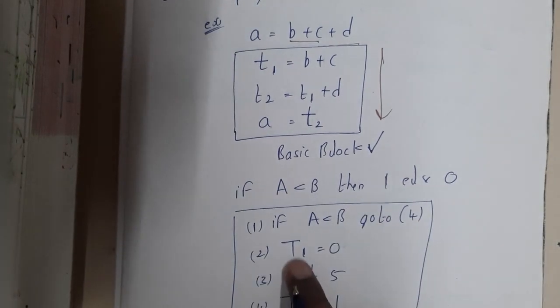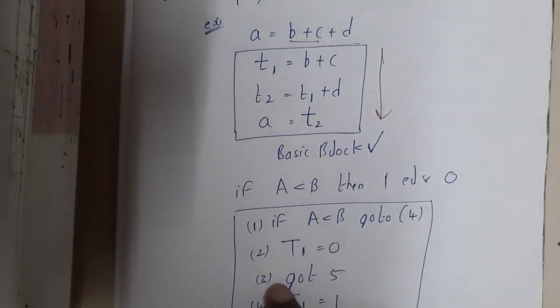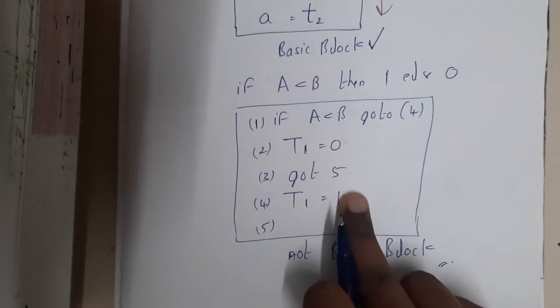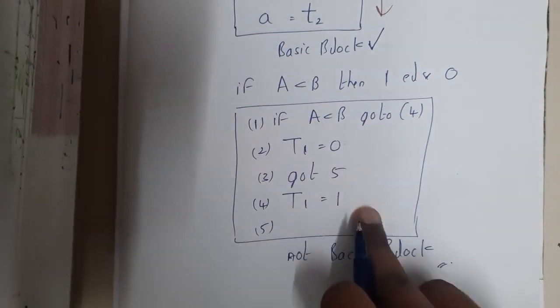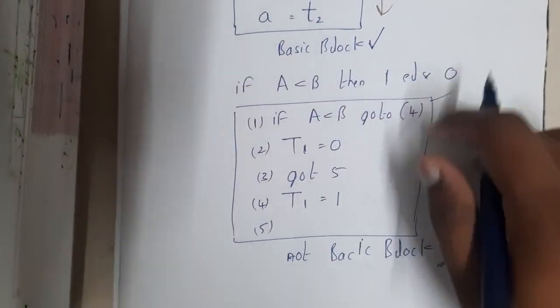If it is less than, then go to 1. Else it is t1 equal to 0 and then go to 5. If you notice here, there is a conditional jump. So based on the condition, you are jumping. This is not a block.